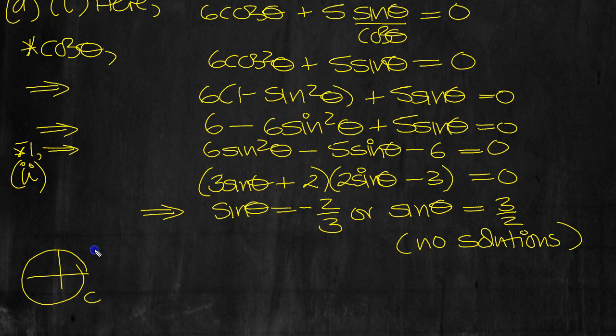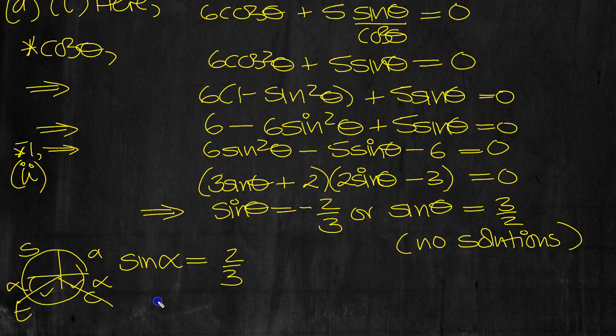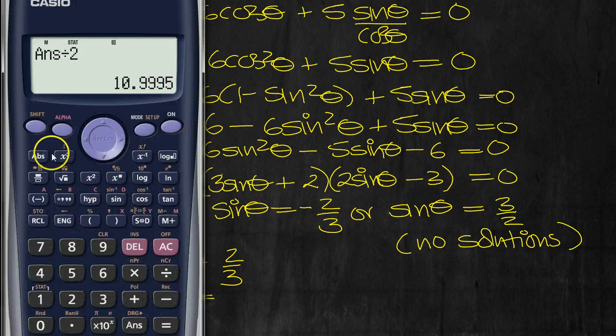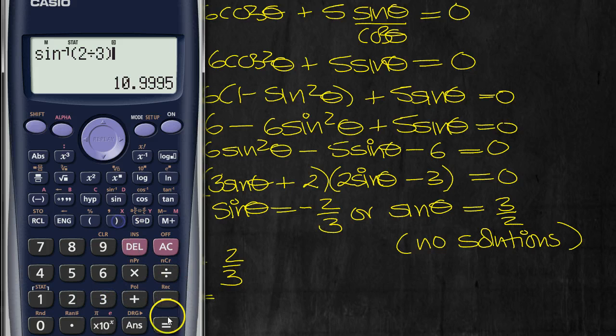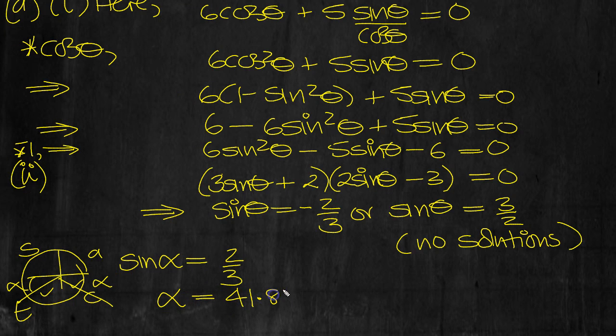So let's draw a circle, CAST. We're looking for 0 to 360. Sine is negative here. Sine is positive here and here. So it's negative there and there. Draw two lines. Mark off alpha the associated acute angle, and simply write sine alpha equals the value without the minus, if there is one. Shift sine 2 thirds then. Shift sine of 2 divided by 3. 41.810. So that's alpha.